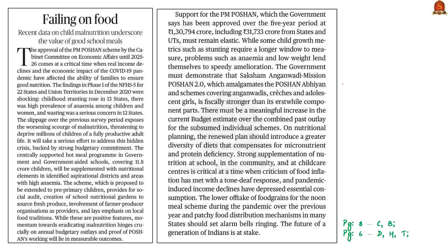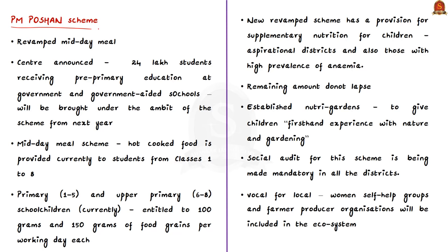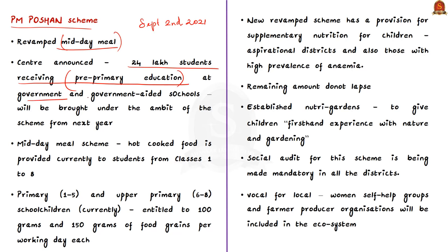The next article talks about the nutrition status in India and the importance of PM Poshan scheme. This is different from Poshan Abhiyan discussed earlier. The midday meal scheme will now be known as PM Poshan. One major change made with child nutrition in mind is that the centre has announced that 24 lakh students receiving pre-primary education at government and government-aided schools will also be brought under the ambit of the scheme from next year.